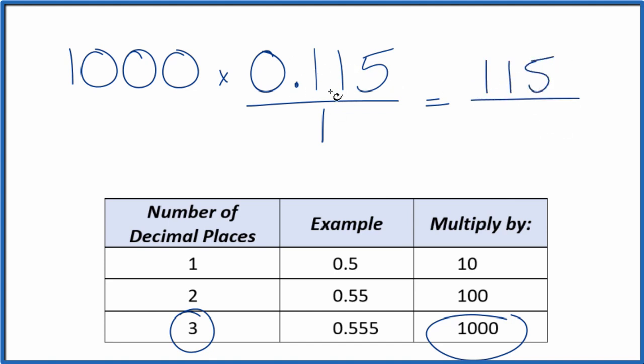But we can't just multiply the numerator here by 1,000. We also need to multiply the denominator by 1,000. That's because 1,000 over 1,000, that's 1. We're multiplying by 1, don't change the value, just the way it's represented.